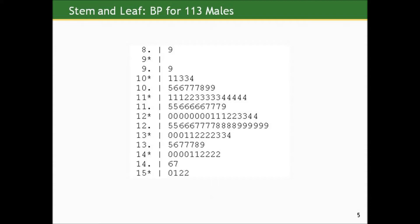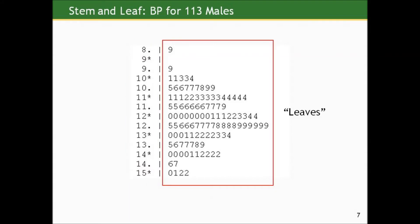Here's our stem and leaf plot. Turn your head or your monitor and you'll see that it looks just like the histogram in shape, but instead of having solid bars, it's made up of numbers. There are two pieces: on the left-hand side before the vertical dashed line are the stems, each representing a bin of fixed width. On the right-hand side of the dashed line are sets of individual numbers called the leaves. To recreate any single observation, you look for the stem row and concatenate the number part of the stem with the number part of any single leaf.